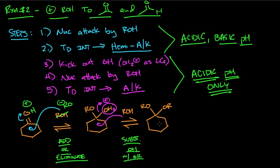So a couple of important things to remember: the formation of a hemi species happens under acidic or basic pH, but the formation of a full acetal or ketal only happens under acidic pH. So that's how we add. In the last video in the series, we're going to talk about how do you hydrolyze and reverse this reaction.